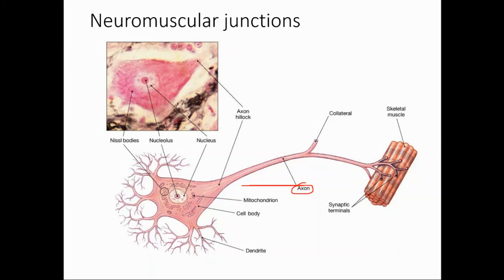The axon ramifies at the end — it branches into processes called terminals. Each terminal has these little pockets. These terminals are called synaptic terminals. So here we're talking about the neuromuscular junction: as a neuron takes contact with a muscle fiber, we call it the neuromuscular junction, because the nerve has to give an input and tell the muscles to contract.